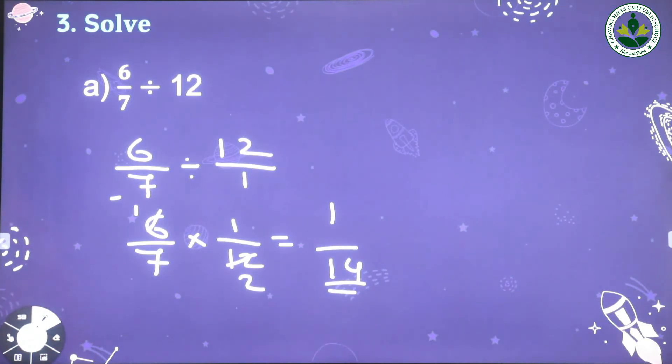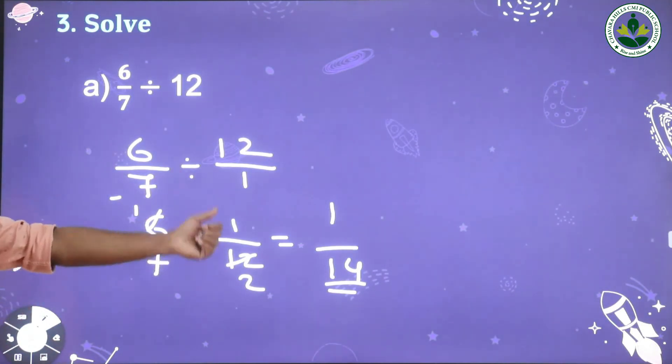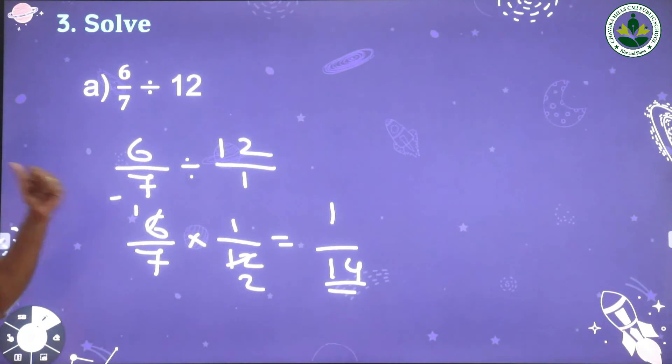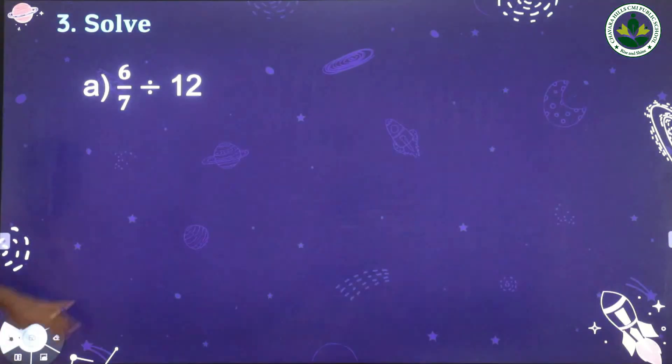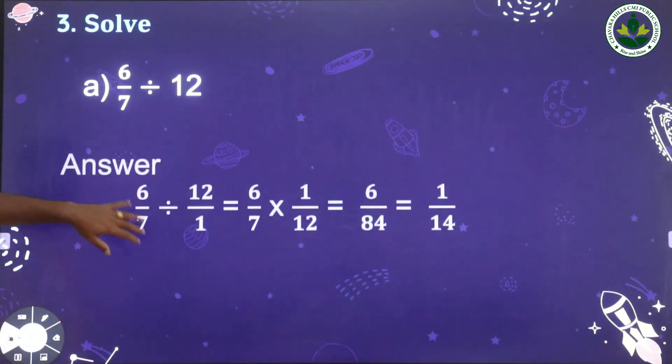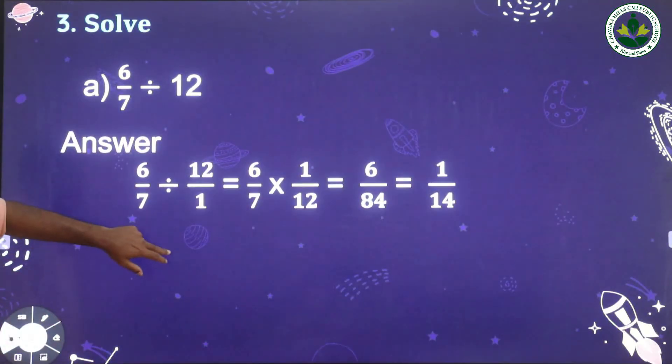For division: take the reciprocal of the second number and multiply. The answer is 1/14.